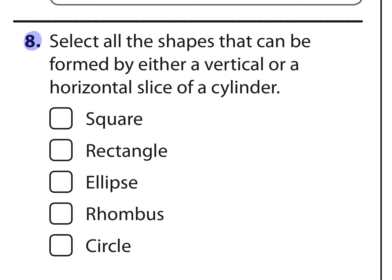Number 8, select all the shapes that can be formed by either a vertical or horizontal slice of a cylinder. We think about what a cylinder is, it's just a can type of shape. So it might look something like this.